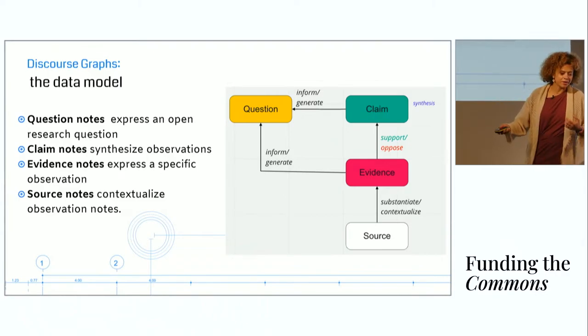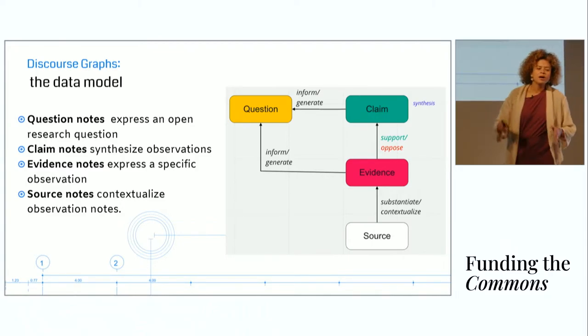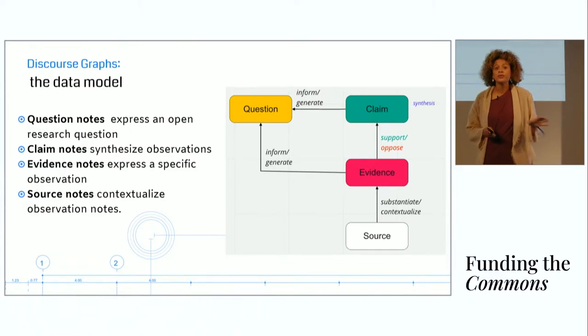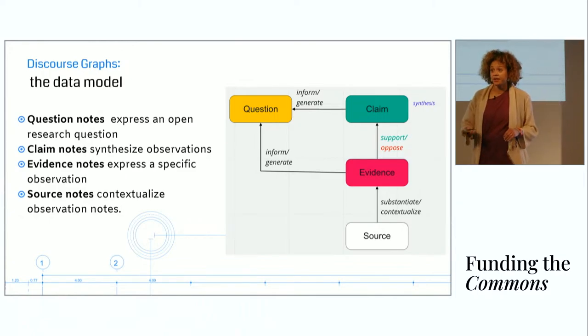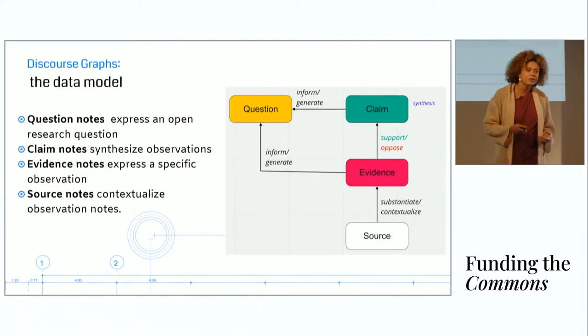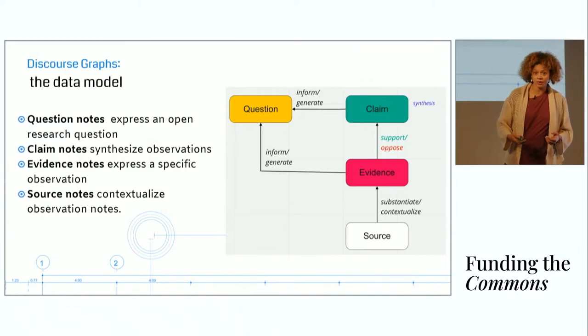A little bit more about the data model. If you think about a discourse graph system as a system of nodes, it could be expressed in a system of post-it notes. It's very simple. Question notes express an open research question. Claim notes synthesize observations, meaning they bring together different things you've noticed about the world and generalize them into a claim. Evidence notes, on the other hand, express a specific observation. They carry a lot of context and specificity. And source notes contextualize those observation notes.